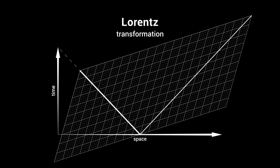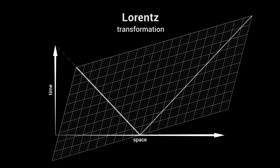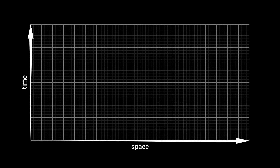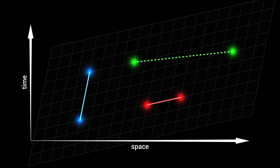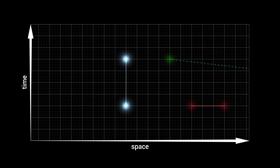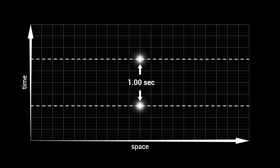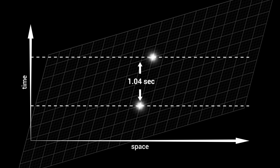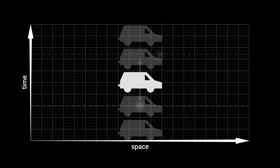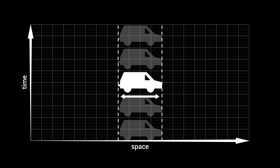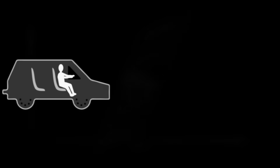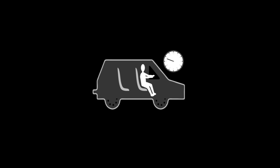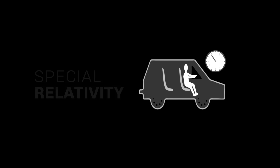The idea behind it is shocking. Time and space warp and change direction depending on the observer. The duration between events, the order in which they occur, and even the lengths of objects become relative measurements which change from one point of view to another. These two events, for instance, occur one second apart in this first frame, but 1.1 seconds apart in this other frame. The car is 4 metres long in its own frame, but slightly shorter in the frame of the road. When a body moves relative to us, its clock seems to tick in slow motion, and its length seems contracted. This is special relativity.